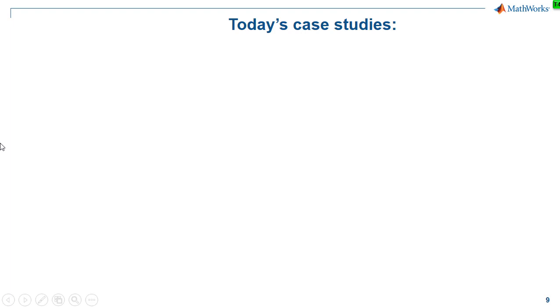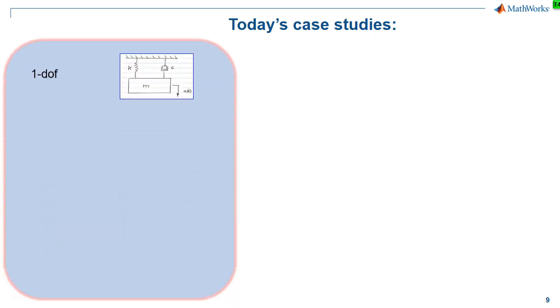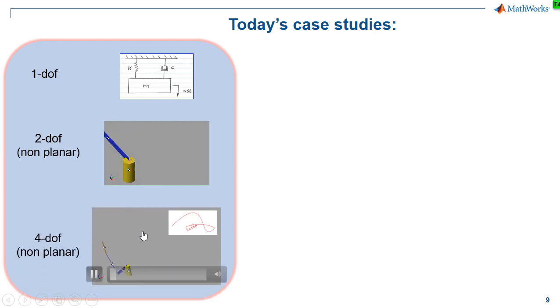So the three case studies that we're going to use today to demonstrate this computational thinking approach are the spring mass damper, an oldie but a goodie, the two degree of freedom non-planar robotic manipulator, and finally, the four degree of freedom robotic manipulator, which we're going to make write hello.